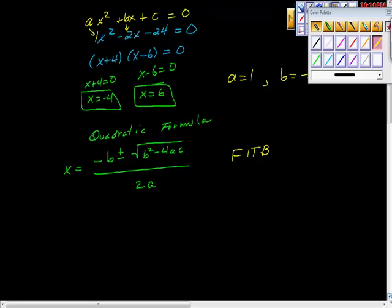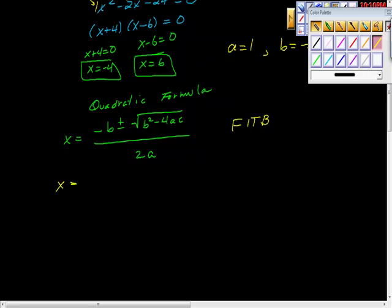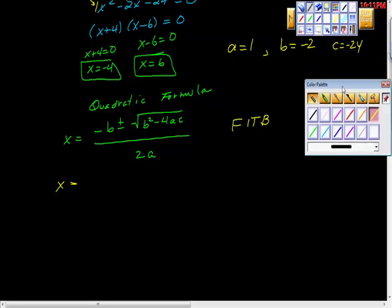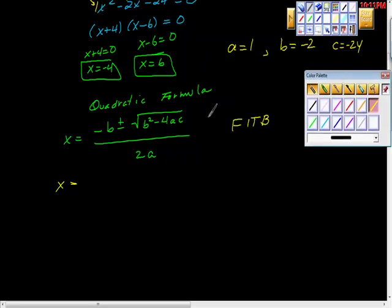And from there, we can just fill in the blanks here, and it would look like this, right? We're going to take this. We want x is equal to, well, the value of b is negative 2, so we want the opposite of that, so that's 2, isn't it? It says plus or minus, square root.